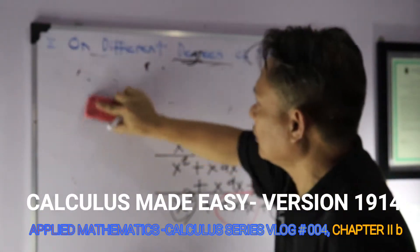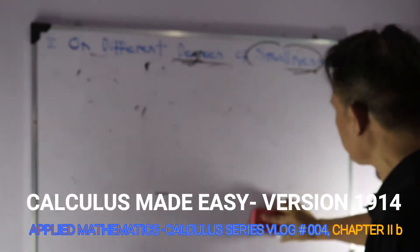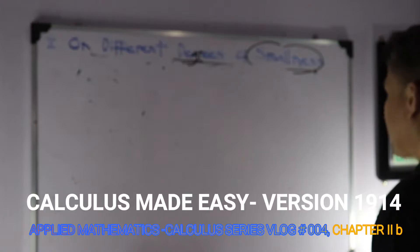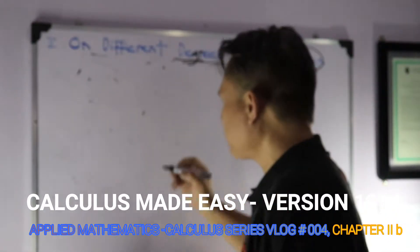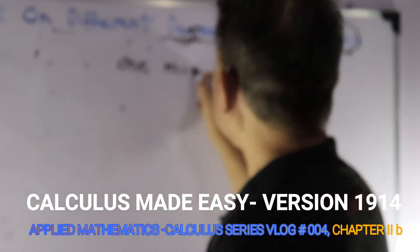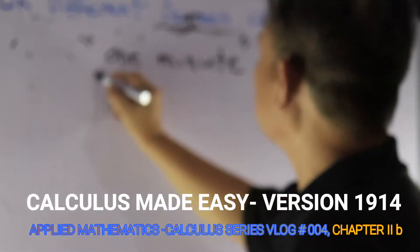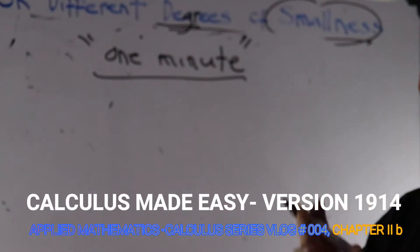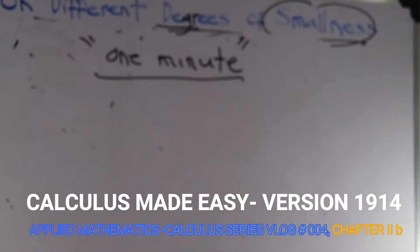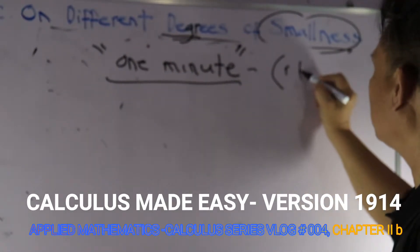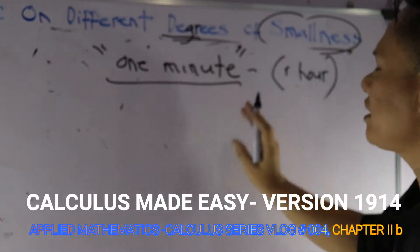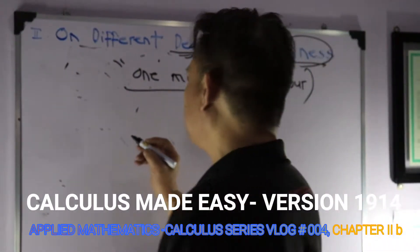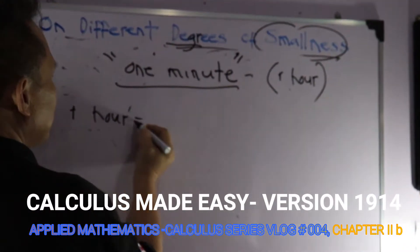A minute brings a significant value on that. For example, we say one minute — one minute itself corresponds to how we could use or comprehend that one. So, in one hour — in one hour, how many minutes do we have? In one hour, we have 60 minutes.